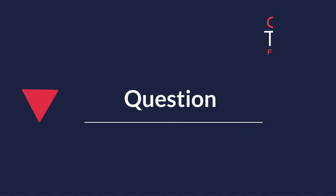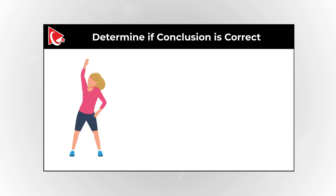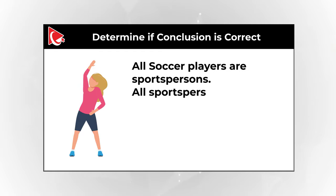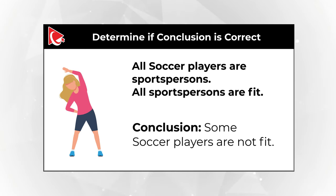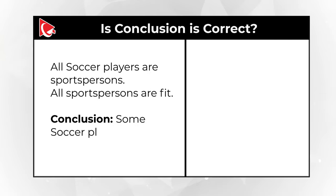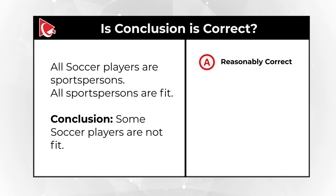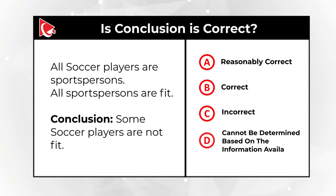Here is a frequently used question to test how logical you are. You need to determine if a conclusion is correct based on the statements. The statements are: all soccer players are sportspersons, and all sportspersons are fit. Conclusion: some soccer players are not fit. You need to determine if this conclusion is correct. Choice A, it's reasonably correct. Choice B, it is correct. Choice C, it's incorrect. And choice D, cannot be determined based on the information available.